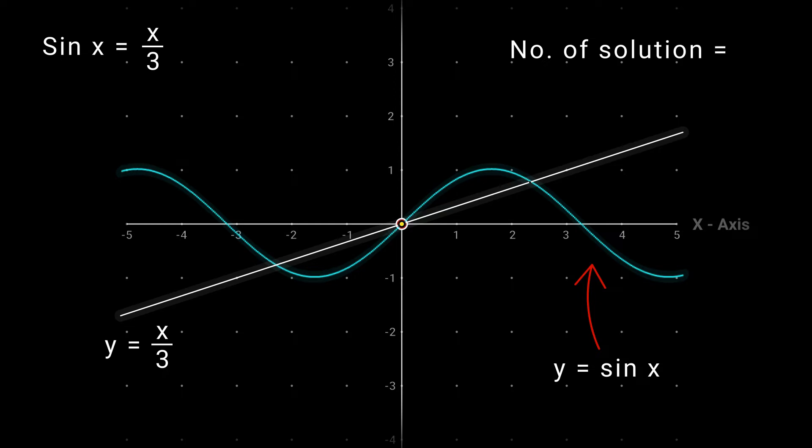Both the graphs intersect with each other at 3 points. So the number of solutions for this equation is 3.